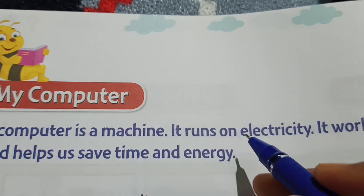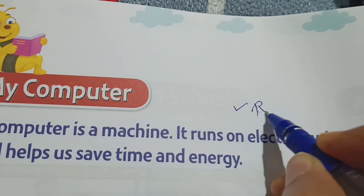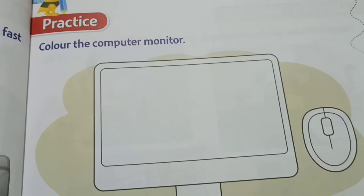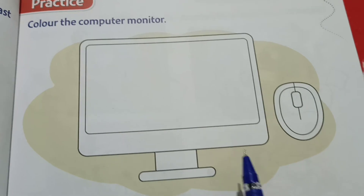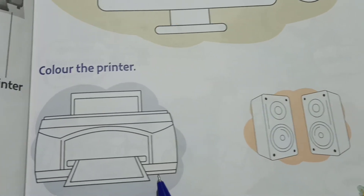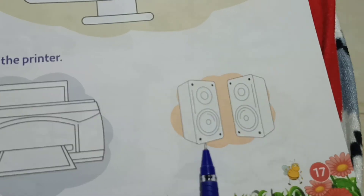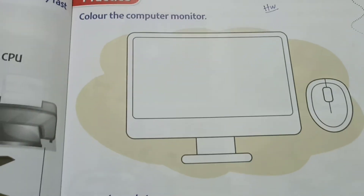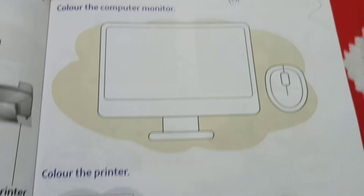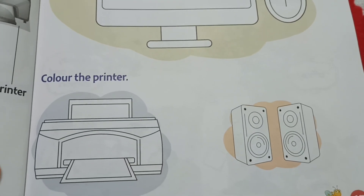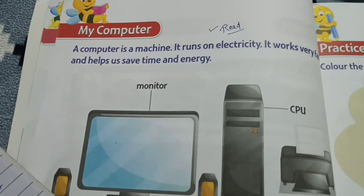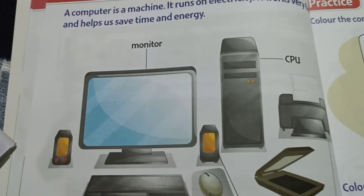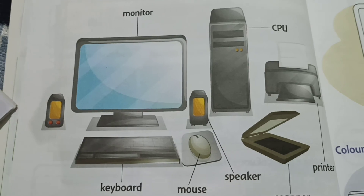So this is today's work. Read this and read the different parts of the computer. Next, color the monitor, mouse, printer, and the speakers. Okay children, this is your homework. Do it as homework. Today's homework is to color the monitor, mouse, printer, and speaker. Read the parts of the computer. See you children in the next class. Take care, children. Bye-bye.